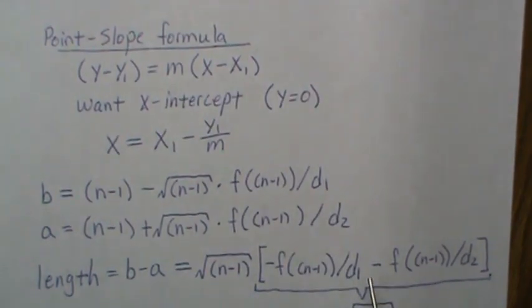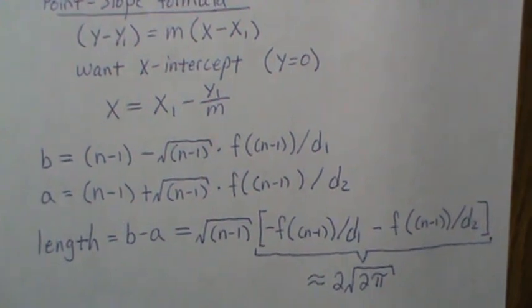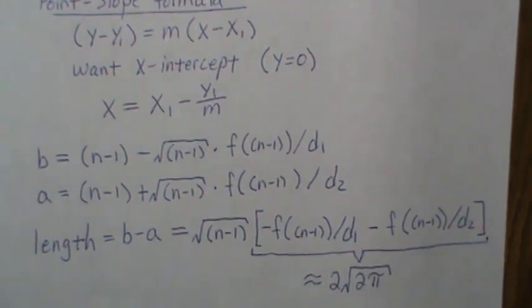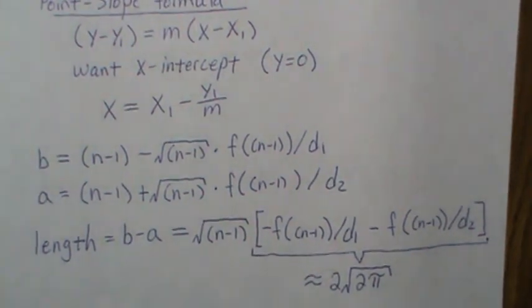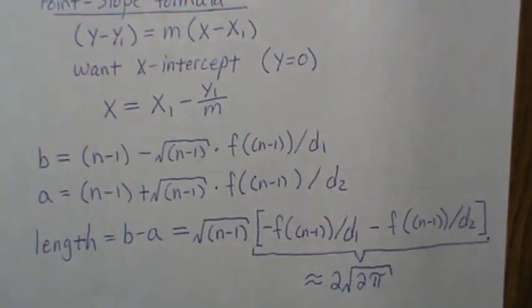Well, it turns out that what's left over is actually really close to two times the square root of two pi. It's really close. I mean, a couple hundredths off, just very close.